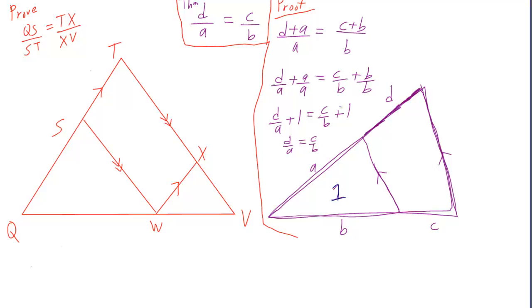So here's the steps in the proof that you can just change d plus a over a to d over a plus a over a, which is equal to d over a plus 1.